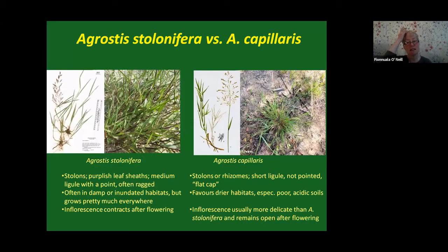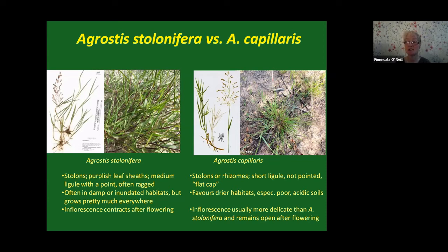To recap the comparison: Agrostis stolonifera spreads by stolons; capillaris spreads by stolons or rhizomes. Agrostis stolonifera has a medium ligule with a point, often ragged; Agrostis capillaris has a short, flat-topped ligule — think 'flat cap for capillaris.' Agrostis stolonifera is often in damp or inundated habitats, whereas Agrostis capillaris favours drier, poor, acidic soils. The inflorescence of Agrostis stolonifera contracts after flowering, while Agrostis capillaris tends to stay open.